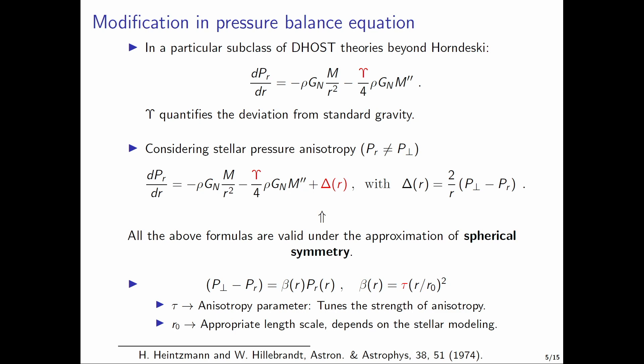If we take account of stellar pressure anisotropy where the radial pressure is not equal to the tangential one, then the pressure balance equation gets further modified by an additional anisotropy term. We consider the following phenomenological model for this anisotropy term with tau being the anisotropy parameter which tunes the strength of anisotropy.